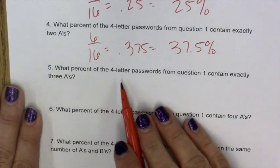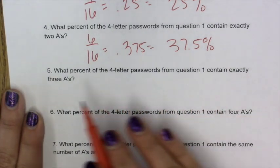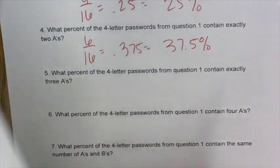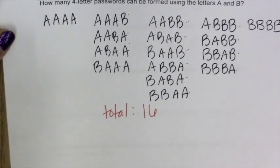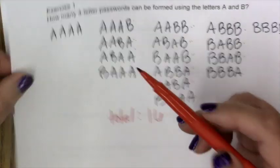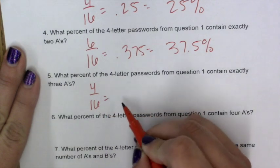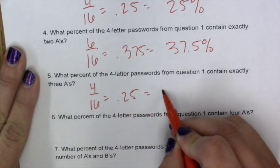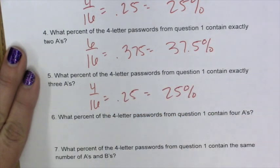What percent of the four letter passwords from Question 1 contain exactly three A's? I have a column for that one as well. 1, 2, 3, 4 out of 16, which is 0.25, 25%.